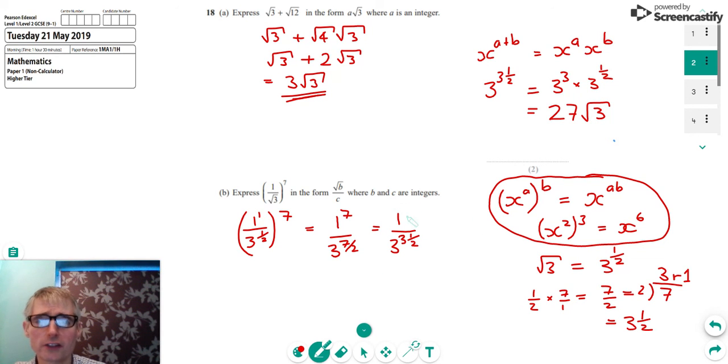So we can say it's 27 times the square root of 3. So that's actually our denominator here now. So that will turn into 1 over 27 root 3. Now we're nearly there. Obviously, it's not quite in the form that we're looking for, because we want the root to be on the top of the fraction.